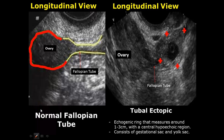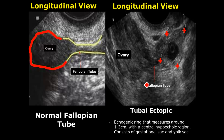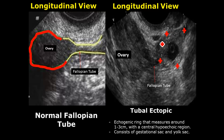Ectopic pregnancies occur outside the uterine cavity. Based on their location, there are different types of ectopic pregnancies; amongst these, the tubal ectopic is the most common, occurring in the fallopian tubes. We can locate the fallopian tubes by first finding the ovary, and we can see the connection which leads to the fallopian tube. There is a gestational sac inside the fallopian tube, confirming a tubal ectopic pregnancy.